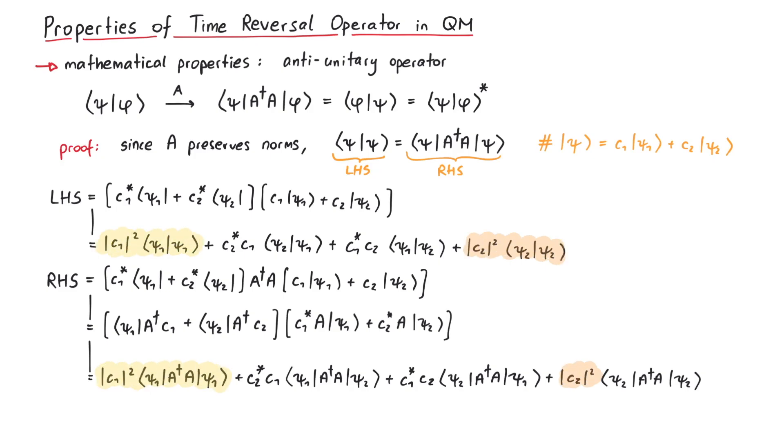If we compare the first and last terms, they don't give us any new information since we have the inner product of a wave function with itself. But if we compare the other two terms, we find that these two terms and these two terms must be equal, which proves our initial statement.